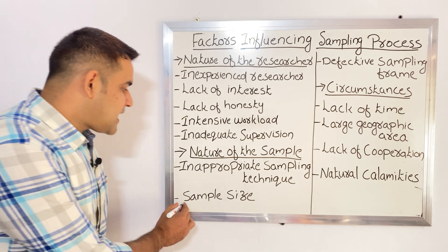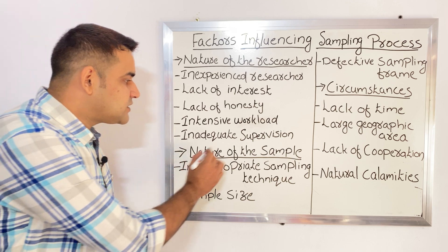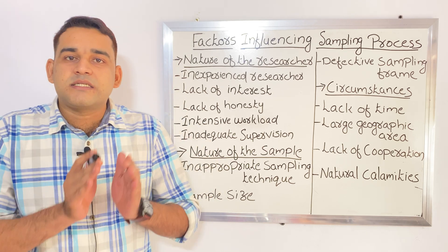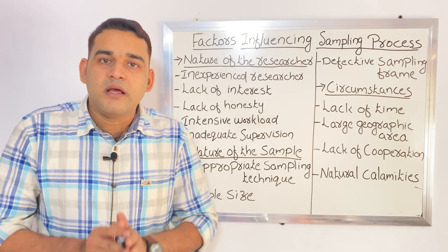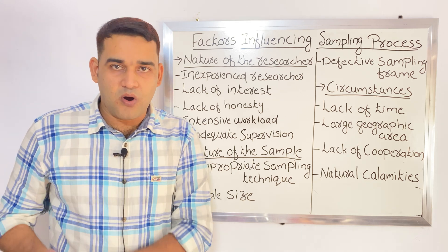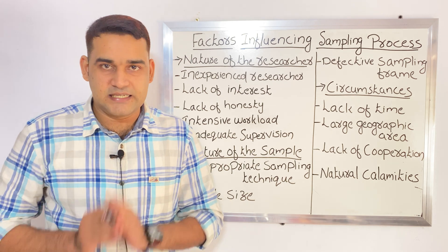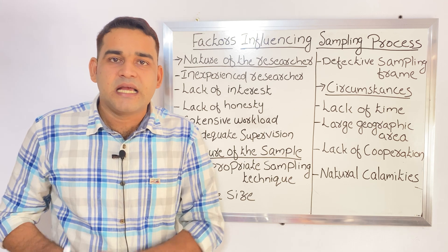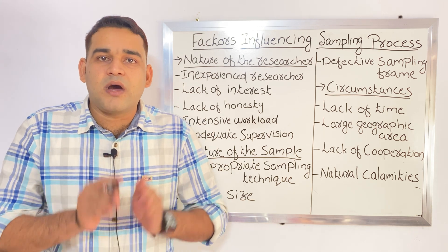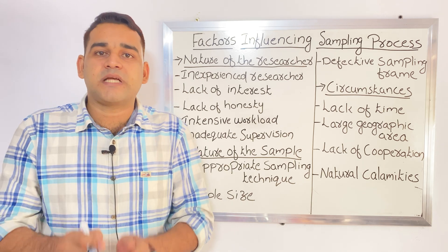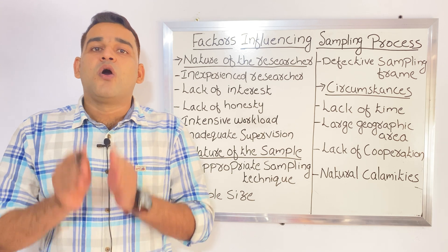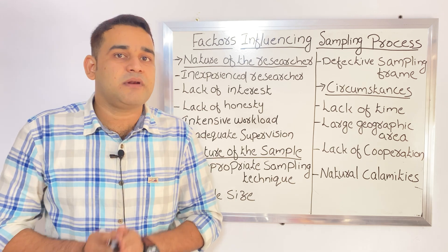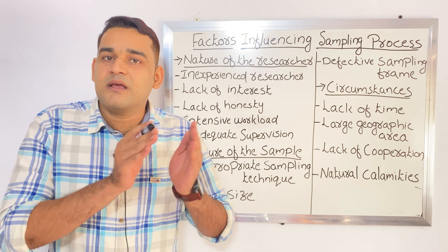Next one is sample size. The second thing coming under nature of the sample is sample size. If your sample size is too large or too small, it will be difficult to generalize your result. You have to select the exact sample size depending upon your study. Both too large and too small sample sizes are going to affect the sampling process.